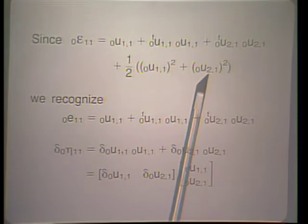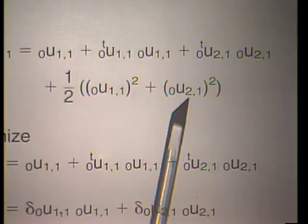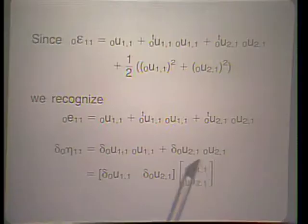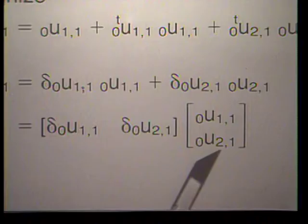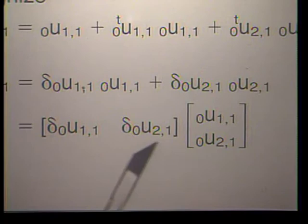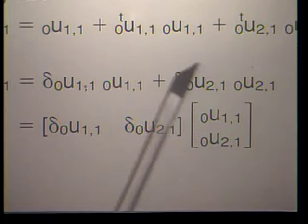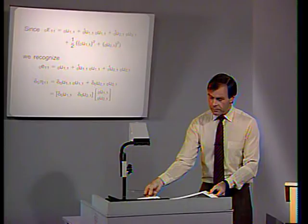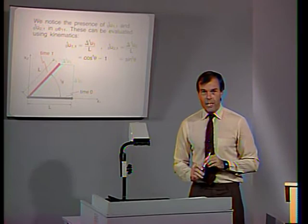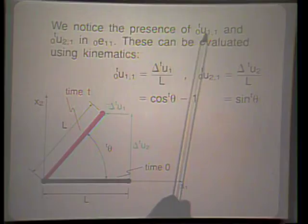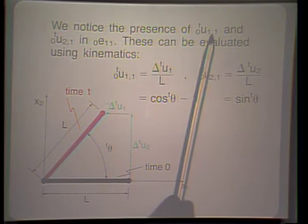We write this now in matrix form as shown. In the total Lagrangian formulation, there is an initial displacement effect, which lies in these particular derivatives. We need to evaluate them from kinematics, as shown in this picture. Notice that we have moved the truss so that nodal point 1 has not moved — this is quite acceptable for deriving the stiffness matrix and force vector since those quantities are not affected by this rigid body translation.